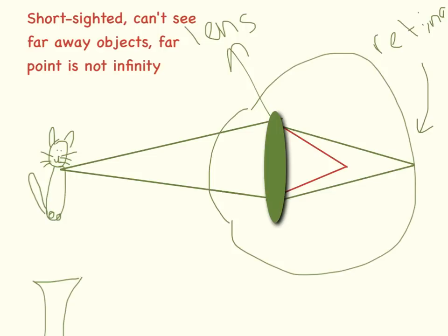So if you are short sighted you can't see far away objects. Your far point is not infinity. And the images focus here not on the retina.